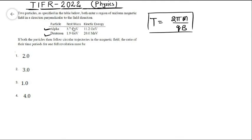But wait, the alpha particle - the rest mass of the alpha particle is 3.7 GeV, but the kinetic energy is 11.2 GeV, which is nearly 4 times the rest mass energy. So we have to take the relativistic effect into account.